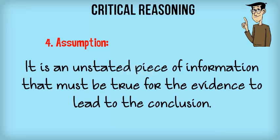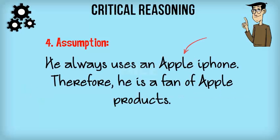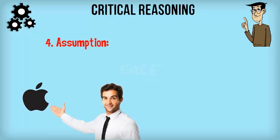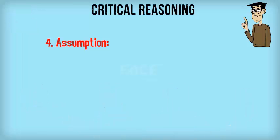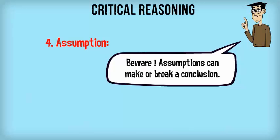Term 4: Assumption. It is an unstated piece of information that must be true for the evidence to lead to the conclusion. It should help form a link between evidence and conclusion. In the example given, he always uses an Apple iPhone is used as evidence, based on which the author derives the conclusion that he is a fan of Apple products. In order to do this, a necessary assumption is required — that is, only a fan of Apple products will use an Apple iPhone. Remember, assumptions are not stated in an argument but can make or break the conclusion.